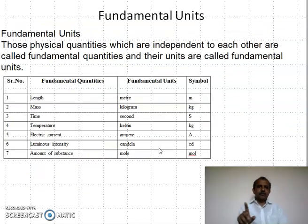Here there are seven fundamental physical quantities with their units. The unit of a fundamental physical quantity is called a fundamental unit. Meter is a fundamental unit. Those physical quantities which are independent of each other are called fundamental quantities, and their units are called fundamental units.